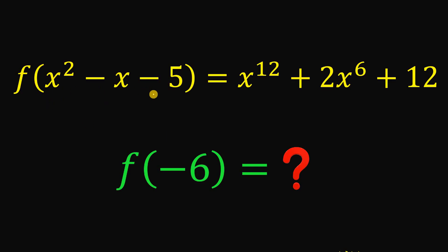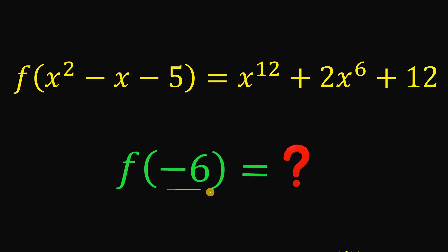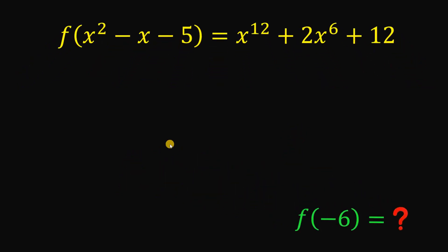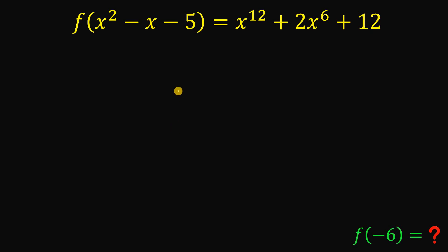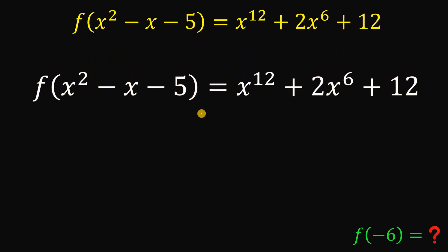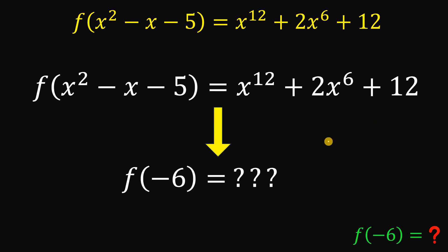Given the function f(x² - x - 5) = x¹² + 2x⁶ + 12, the goal is to find or to evaluate f(-6). Pause the video and see if you can answer this question. The function is f of x squared minus x minus 5 equals x raised to the power of 12 plus 2x raised to the power of 6 plus 12, and we need to evaluate f of negative 6.